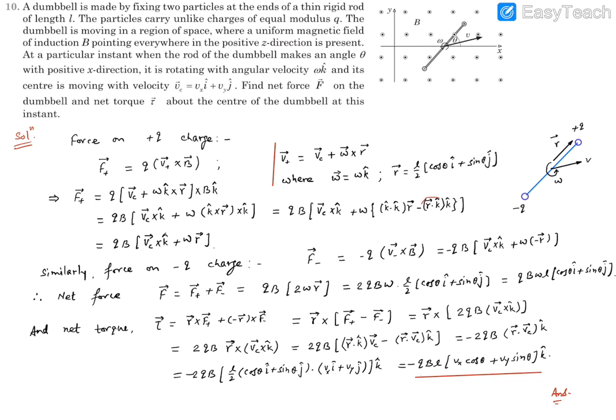Now, we know this R vector is in the x, y plane. You can see this is the x, y plane. And k cap is the z direction, which is perpendicular to the plane. So basically, this is a dot product between two perpendicular vectors, that means its value is zero. And this is k cap dot k cap, that's a unit, so that becomes 1. So this force on the positive charge gets simplified as Q B within the bracket, Vc vector cross k cap plus omega R vector.